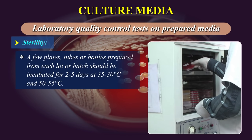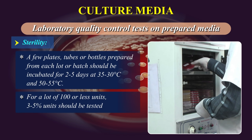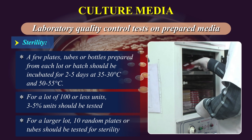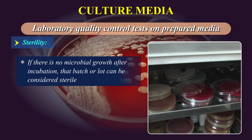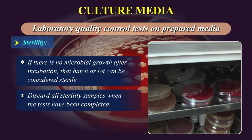Sterility. A few plates, tubes, or bottles prepared from each lot or batch should be incubated for 2–5 days at 35–37 degrees centigrade and 50–55 degrees centigrade. For a lot of 100 or fewer units, 3–5% of units should be tested. For a larger lot, 10 random plates or tubes should be tested for sterility. If there is no microbial growth after incubation, that batch or lot can be considered sterile. Discard all sterility samples when the tests have been completed.